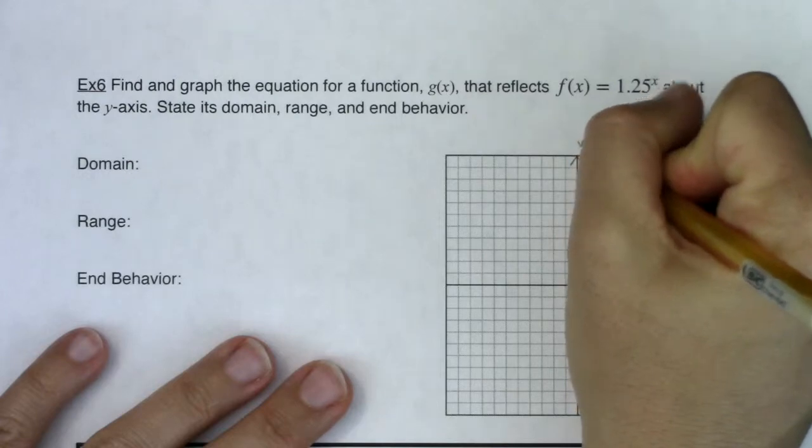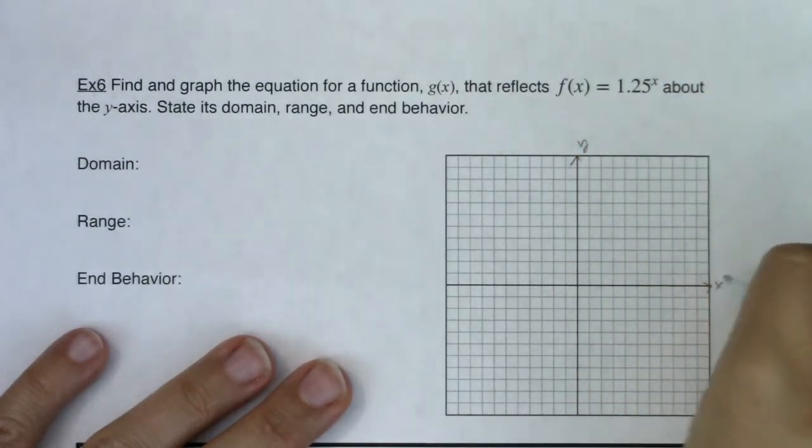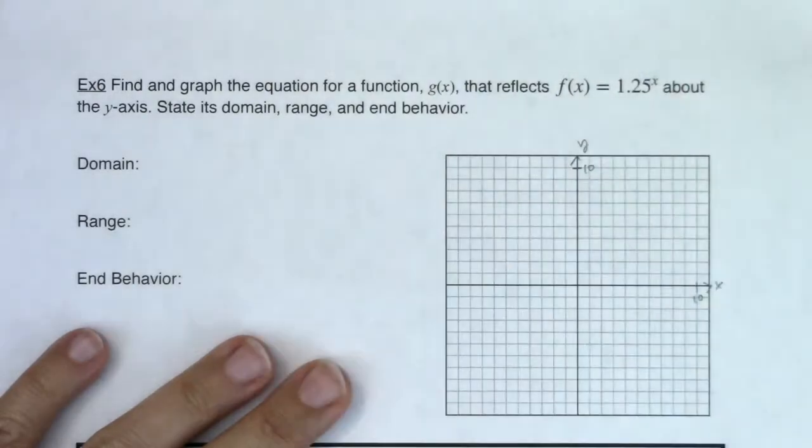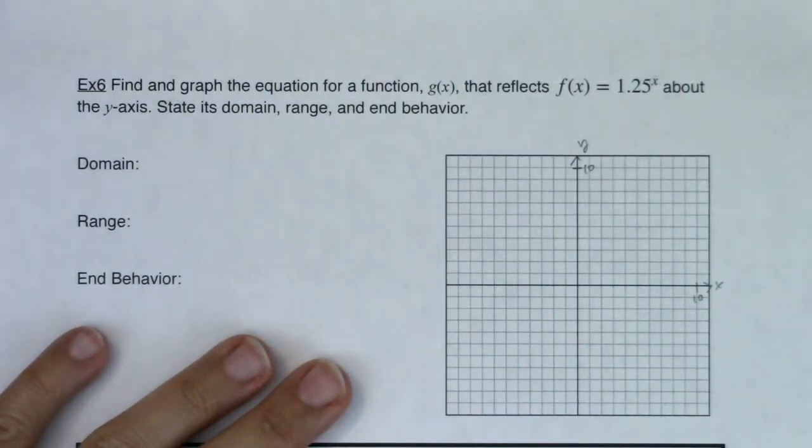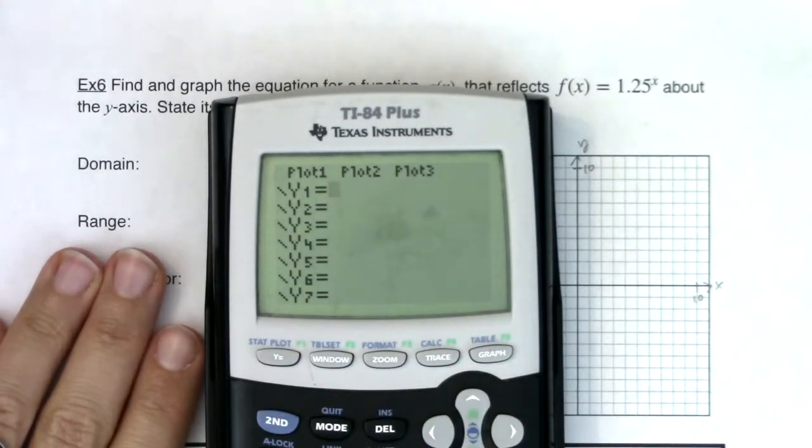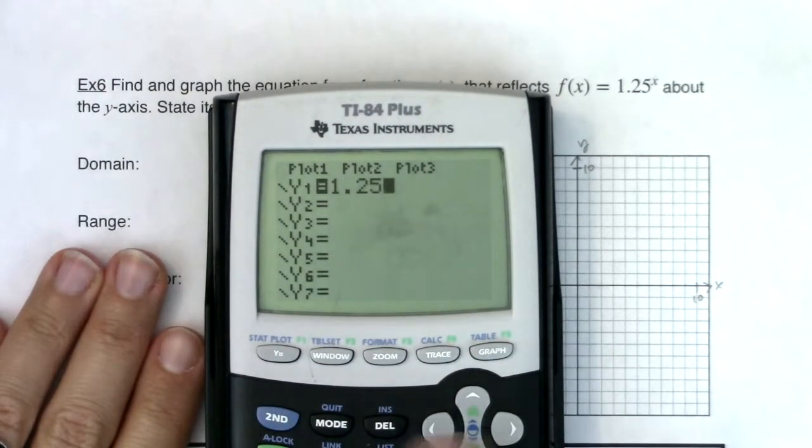So let me go ahead and just get my axes labeled and scaled, and I want to go ahead and graph these functions. So let me go ahead and get my graphing calculator. Here it is. Let's go to our y equals, and I'm going to type in 1.25 to the x.